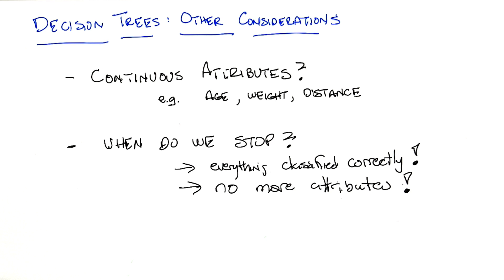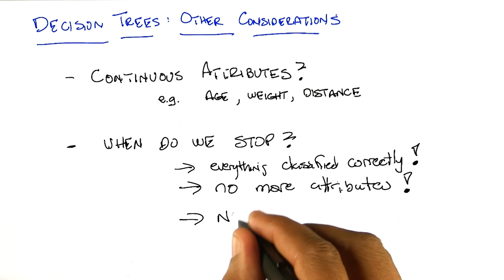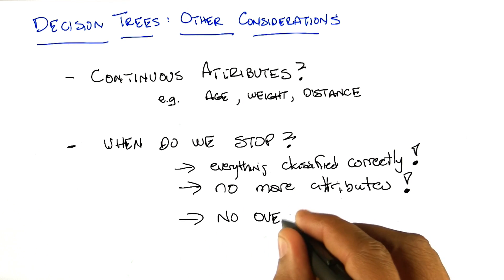Right. That sounds like overfitting. Exactly. We have to worry about overfitting. So, you can overfit with the decision tree too?